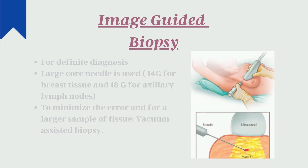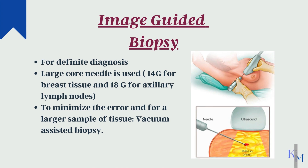Finally, the third arm of triple assessment is image-guided biopsy. We can use ultrasound, mammogram, or MRI to image it. A large core needle is used to take the sample for histopathological evaluation. Vacuum-assisted biopsy can take a larger volume of tissue sample in one go, so it can be employed in cases of microcalcifications or smaller lesions.